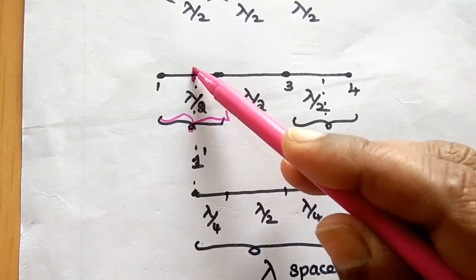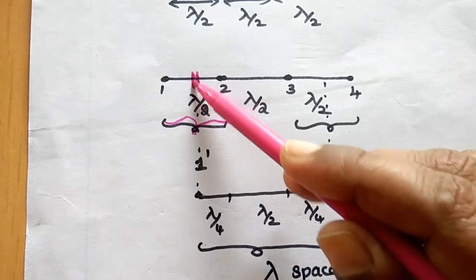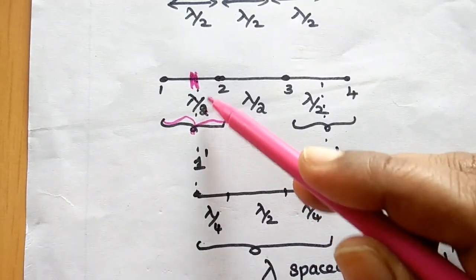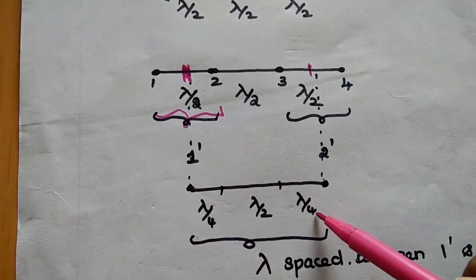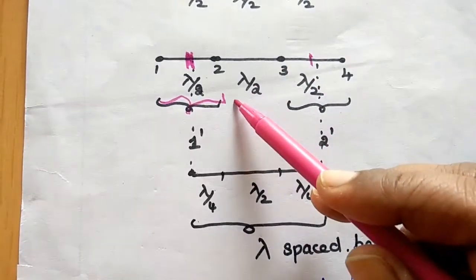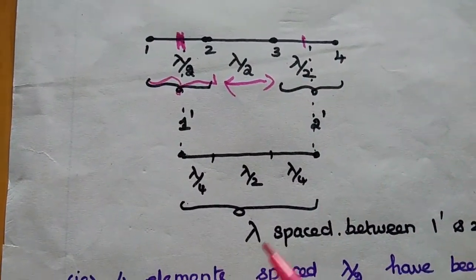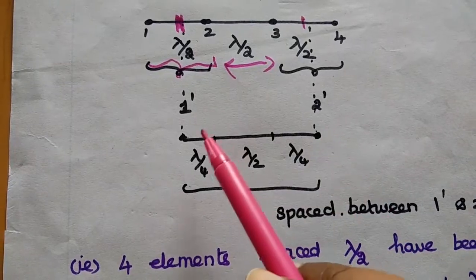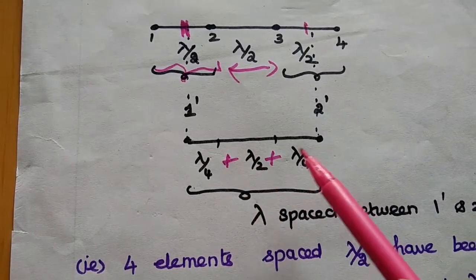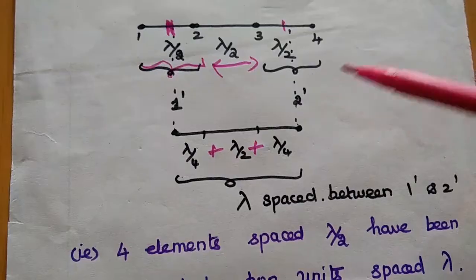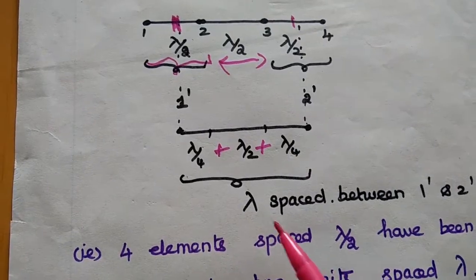To find the new spacing, we take the average distance within each pair. Half of λ/2 is λ/4 on each side. So the total distance between the two grouped elements (1-dash and 2-dash) is λ/4 + λ/2 + λ/4 = λ. Therefore, this four-element array spaced λ/2 has been converted into two unit elements spaced λ apart.